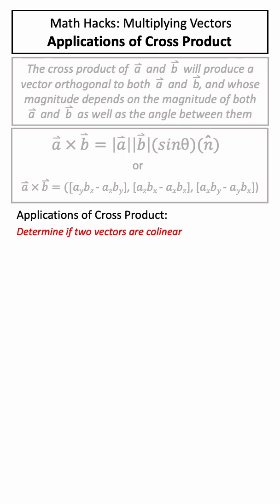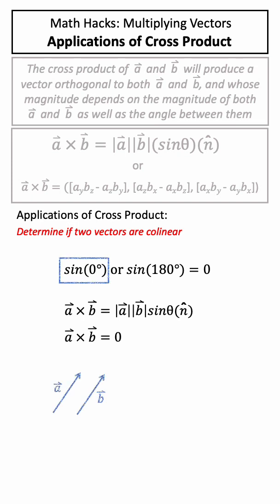For example, we can use cross product to determine if two vectors are collinear. Because sine of zero degrees or 180 degrees is zero, our cross product will be equal to zero when our vectors are parallel or antiparallel.